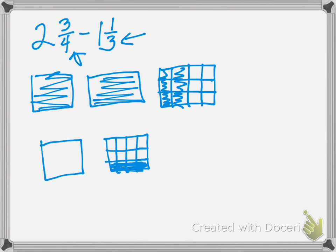Counting the sections: both rectangles now have 12 sections each. In our first rectangle we have 2 whole rectangles and 6 twelfths colored in. Down in the second rectangle we have 1 whole and 4 twelfths colored in.